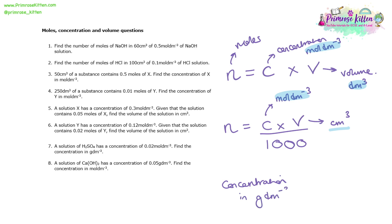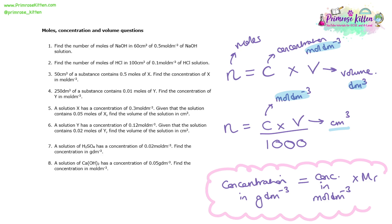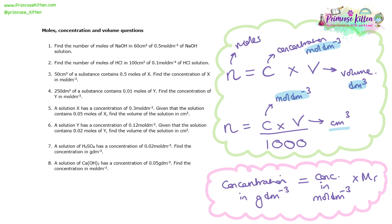On top of that, we need to know how to link concentration in grams per decimetre cubed to a concentration in moles per decimetre cubed. The way we can link the two is by stating that the concentration in grams per decimetre cubed is equal to concentration in moles per decimetre cubed times by the Mr of that substance. These are the equations we're going to be using — put them on a flashcard and memorise them, as they come up all the time in chemistry.